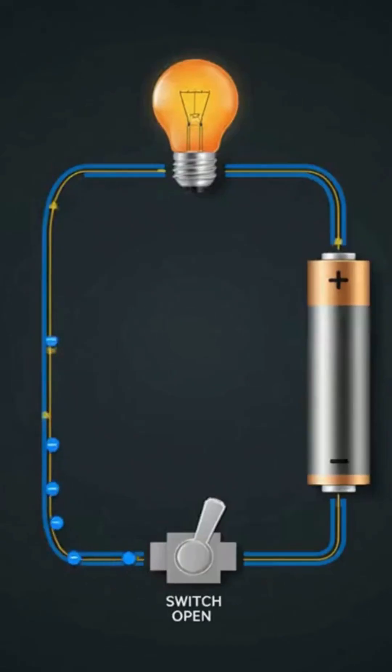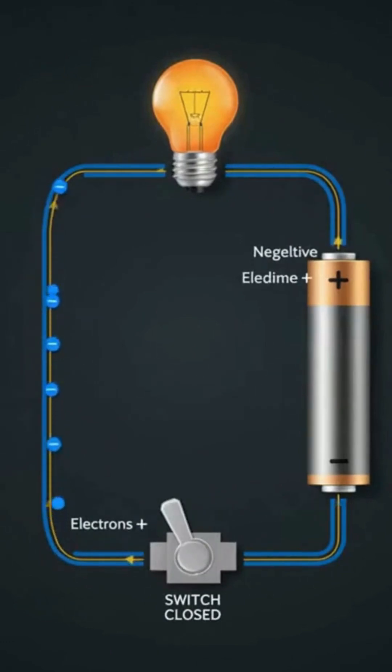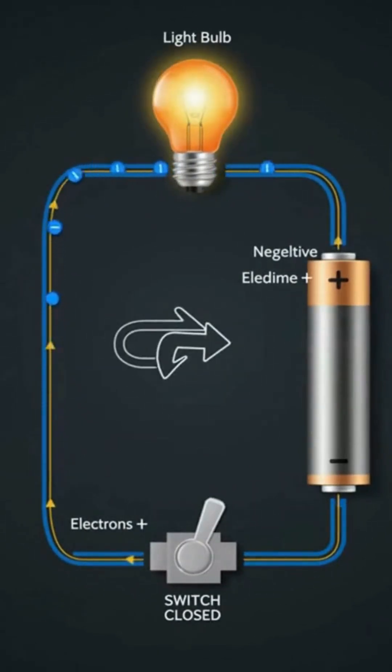When a voltage is applied, with the switch open, electrons leave the battery's negative terminal but can't complete the trip. Closing the switch completes the path. Electrons now flow through the wire, into the bulb's filament, and back to the battery.